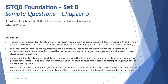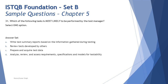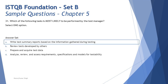Question number 31: which of the following tasks is most likely to be performed by the test manager? These are K1 level topics — straightforward, no justification needed. Option A: write test summary reports based on information gathered during testing — yes, that's the test manager. Option B: review tests developed by others — tester's responsibility. Option C: prepare and acquire test data — tester. Option D: analyze, review and assess requirements specifications and models for testability — also a tester. The right answer is A: test summary reports and test progress reports are responsibilities of the test manager.